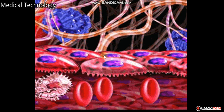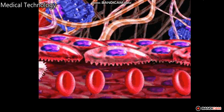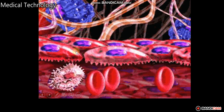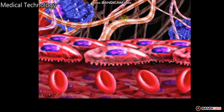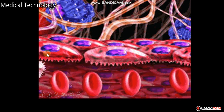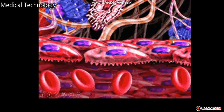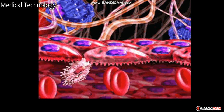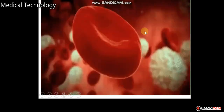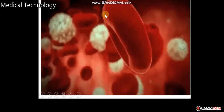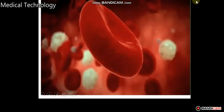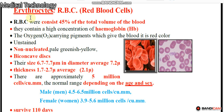These are RBCs, these are white blood cells, and this is the endothelial cells. This is the shape of the RBC. The main function of the RBC is carrying oxygen, because it has hemoglobin.